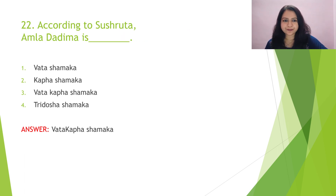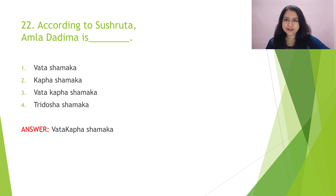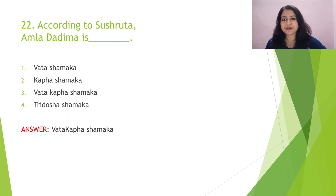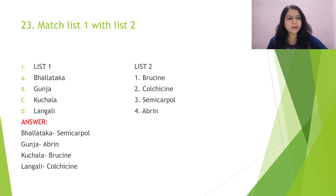Question 22: According to Susruta, amla dadima is — again from the same 46th chapter, so please give due importance to it. The options are vata shamaka, kapha shamaka, vata-kapha shamaka, and tridosha shamaka. Acharya has mentioned two types of dadima: madhura and amla. The property of madhura dadima is tridosha shamaka, and that of amla dadima is vata-kapha shamaka.